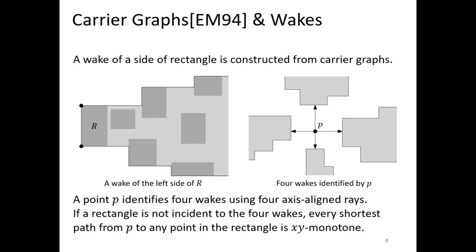Our query algorithm is to find four wakes using four horizontal and vertical rays from the query point and handle them separately. If a rectangle is not incident to the four wakes identified by P, every shortest path from P to any point in the rectangle is XY-monotone. We then consider when the rectangle is incident to the wake of the left side.